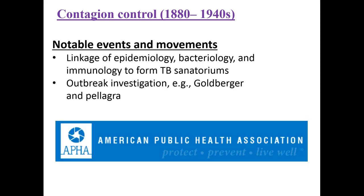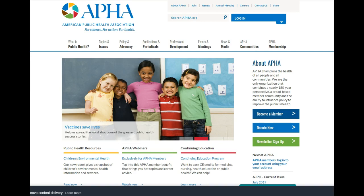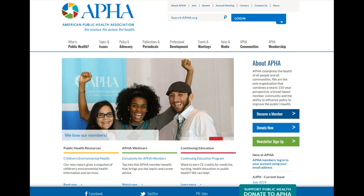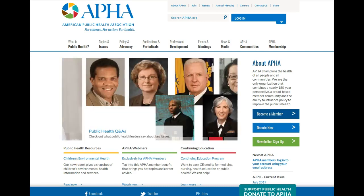Another very important event during this era is the establishment of the American Public Health Association. This is a professional organization and the big player in public health in the United States. Let's take a look at the American Public Health Association's webpage — the first organizational webpage we're going to view. Throughout this course there will be many others, such as the Centers for Disease Control and Prevention and Healthy People 2020, but I want to make sure you are familiar with these big players in public health.